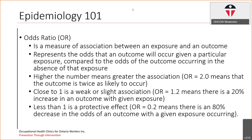If the value is close to one, it's a weaker association. An odds ratio of 1.2 means it's a 20% increase in an outcome with a given exposure. And if an odds ratio is less than one, there's actually a protective effect. For example, with an odds ratio of 0.2, that means there's an 80% decrease in the odds of an outcome occurring with a given exposure.